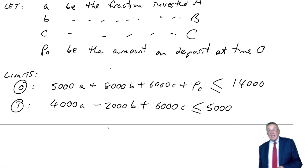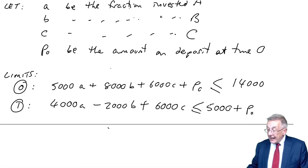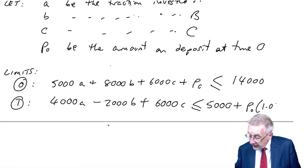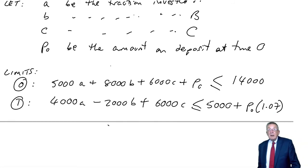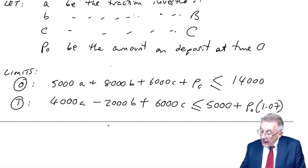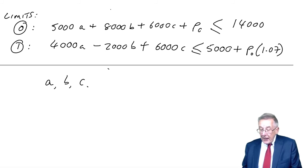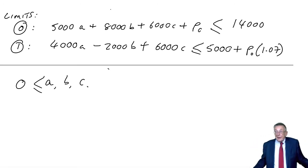But again, if we had put money on deposit at time zero, it'd still be there at time one. We'd have more available. So in addition to the 5,000, we'd have the money on deposit P0, together with interest. It says it could earn interest at 7%. So to add on a year's interest, multiply by 1.07. So whatever answer we ended up with for A, B, C and P0, they must satisfy both of those limits.